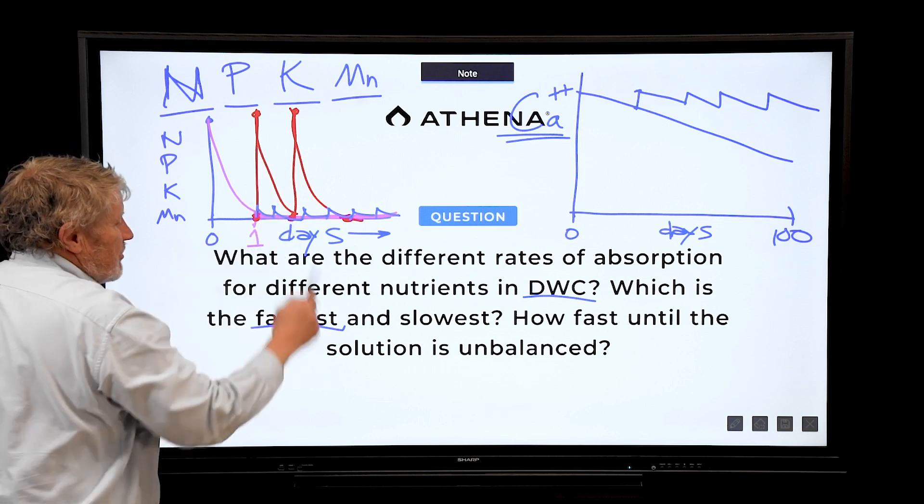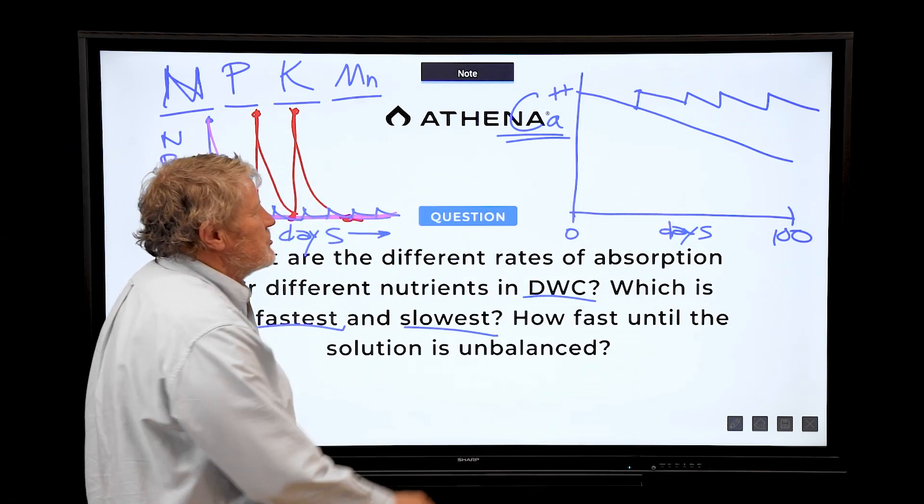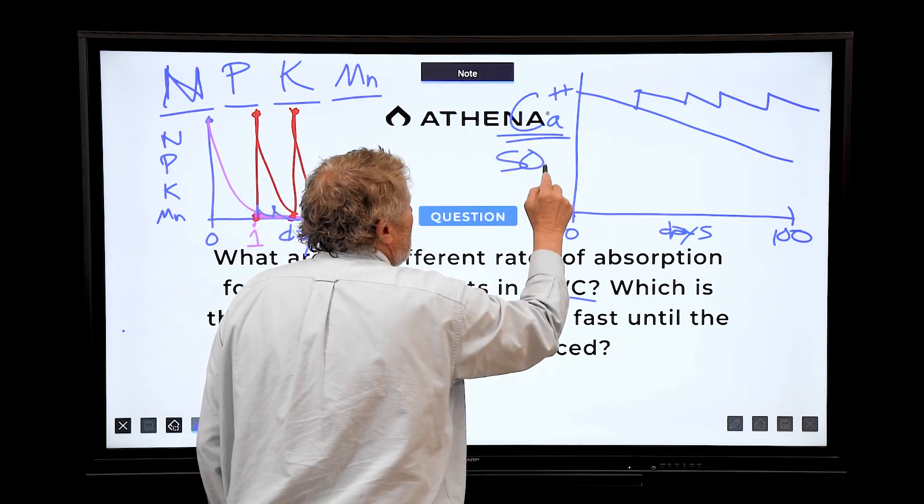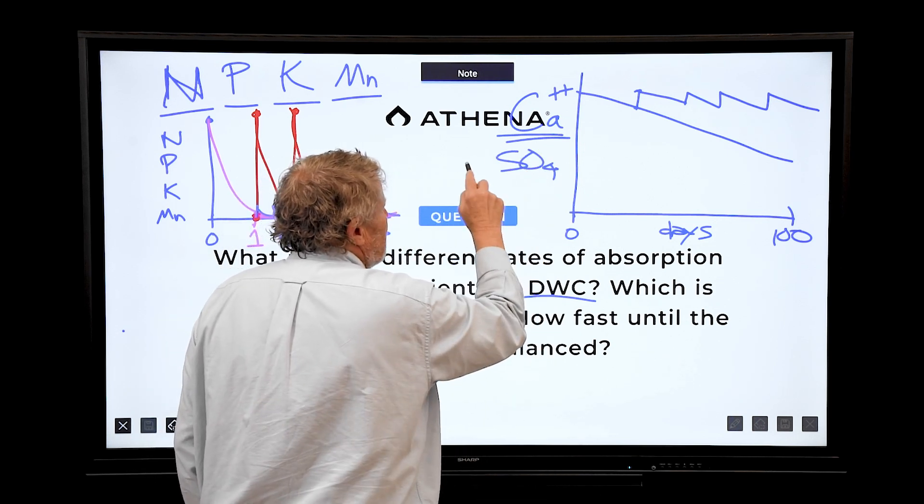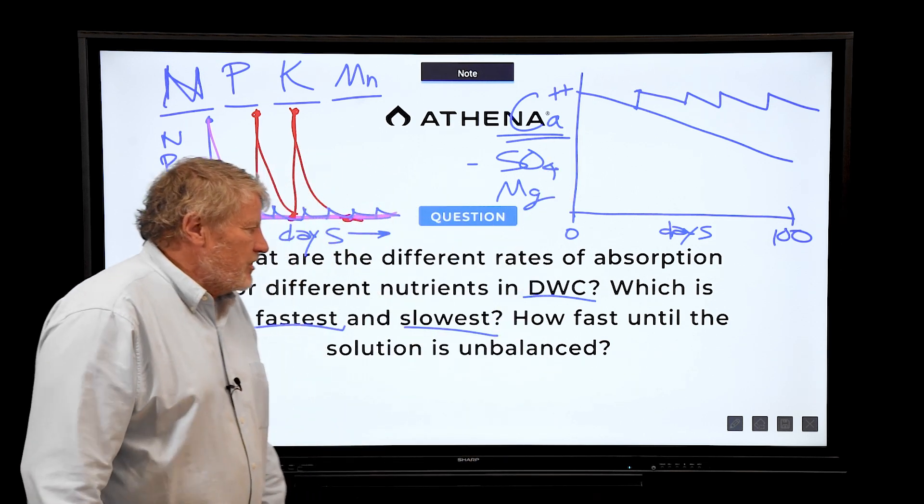But as a rule of thumb, the fastest right here and the slowest is everything else really over here. Sulfate is slow, slower. Manganese, magnesium, slower. Pretty much everything else is over here.